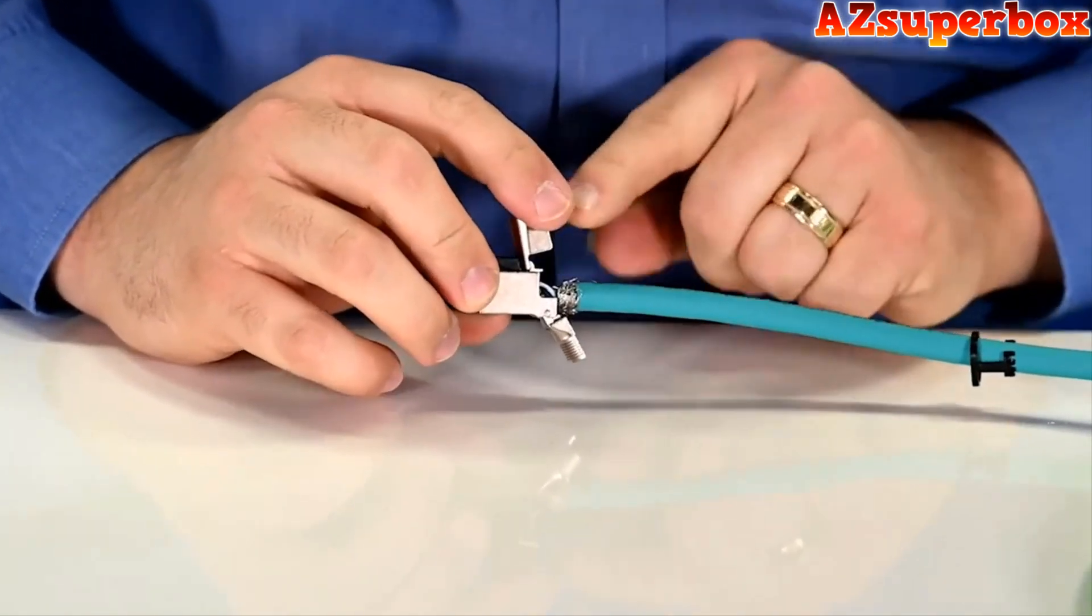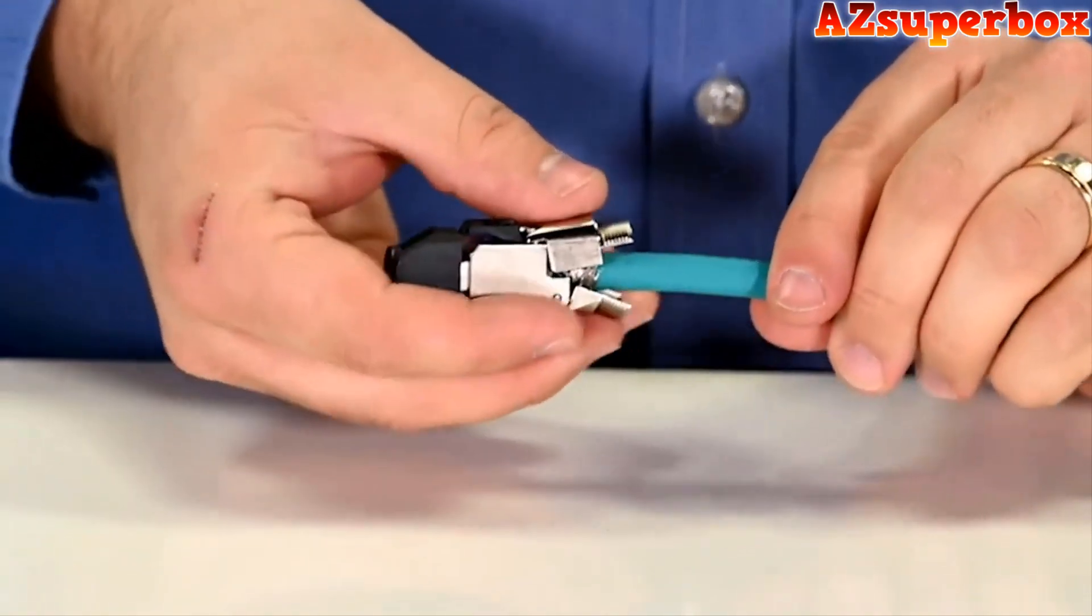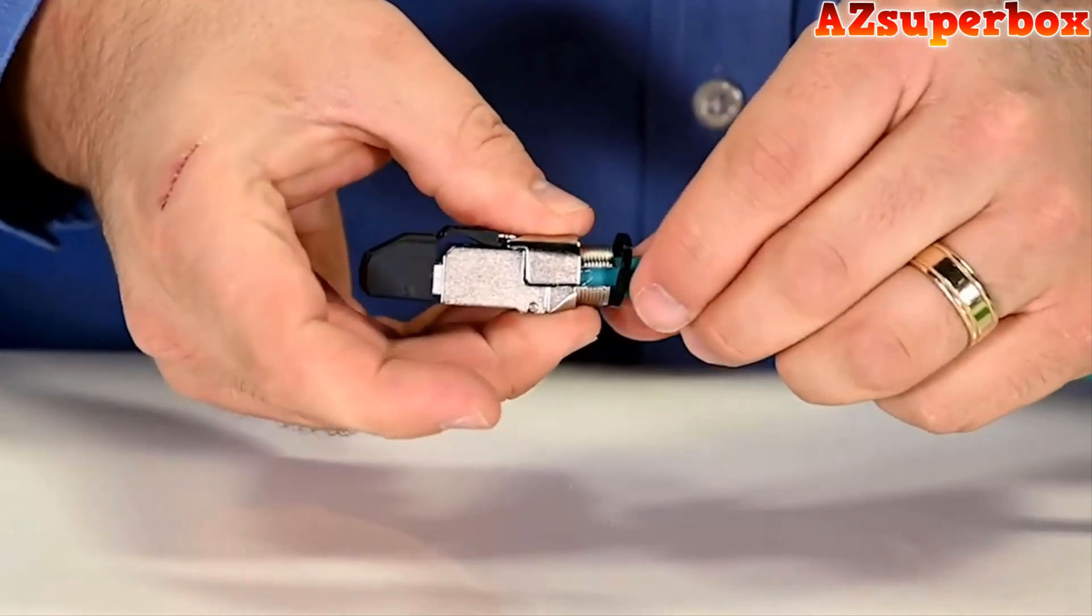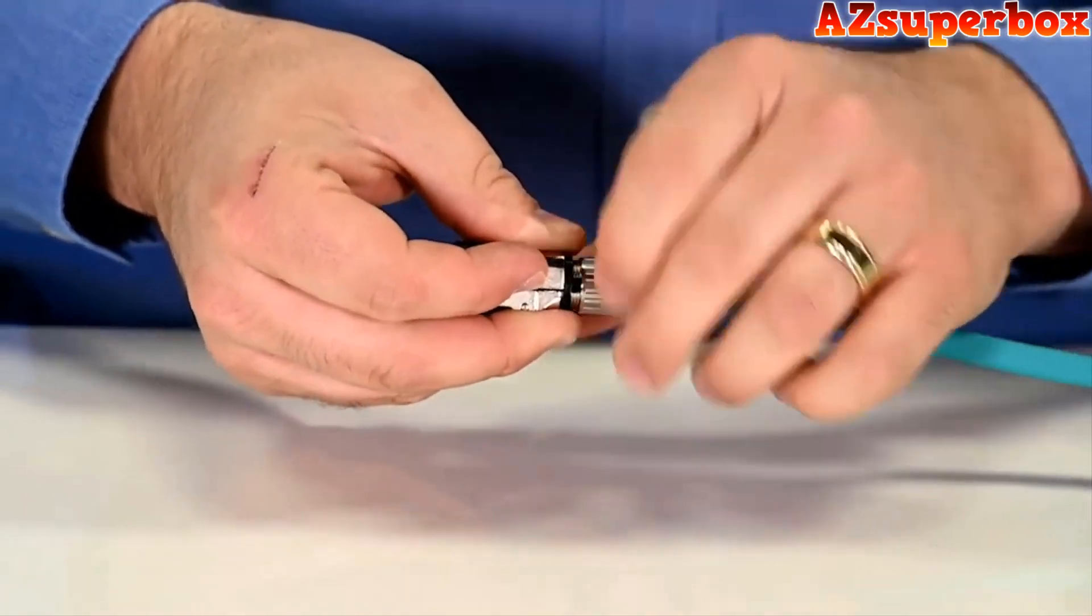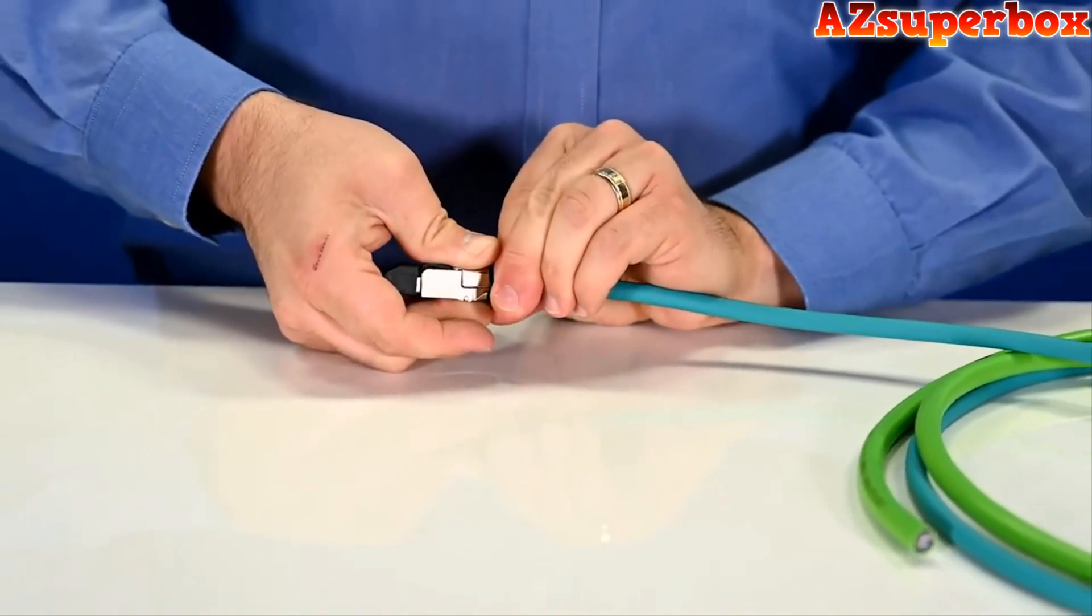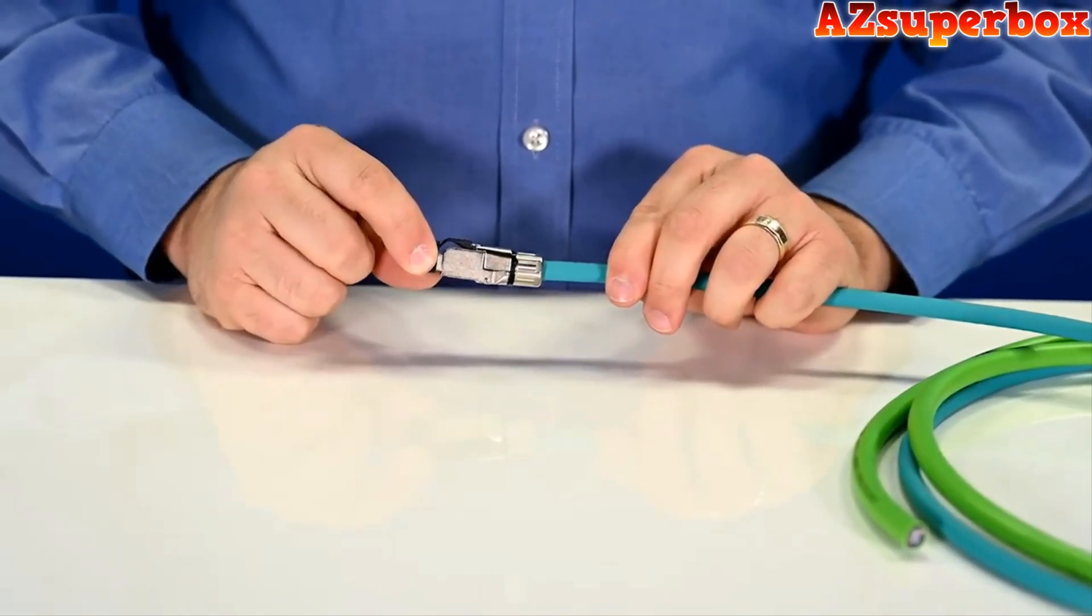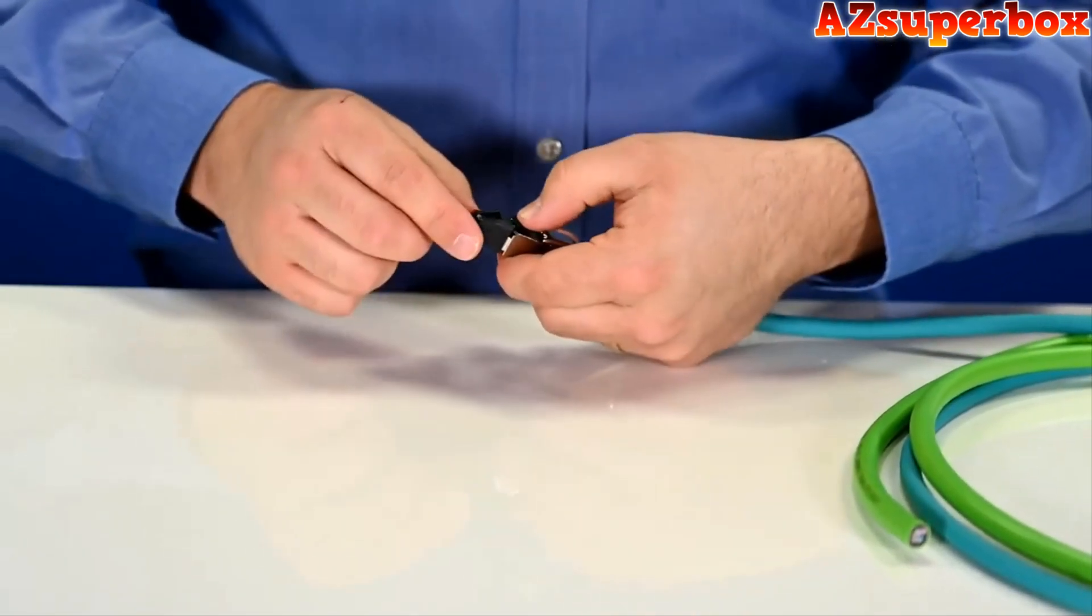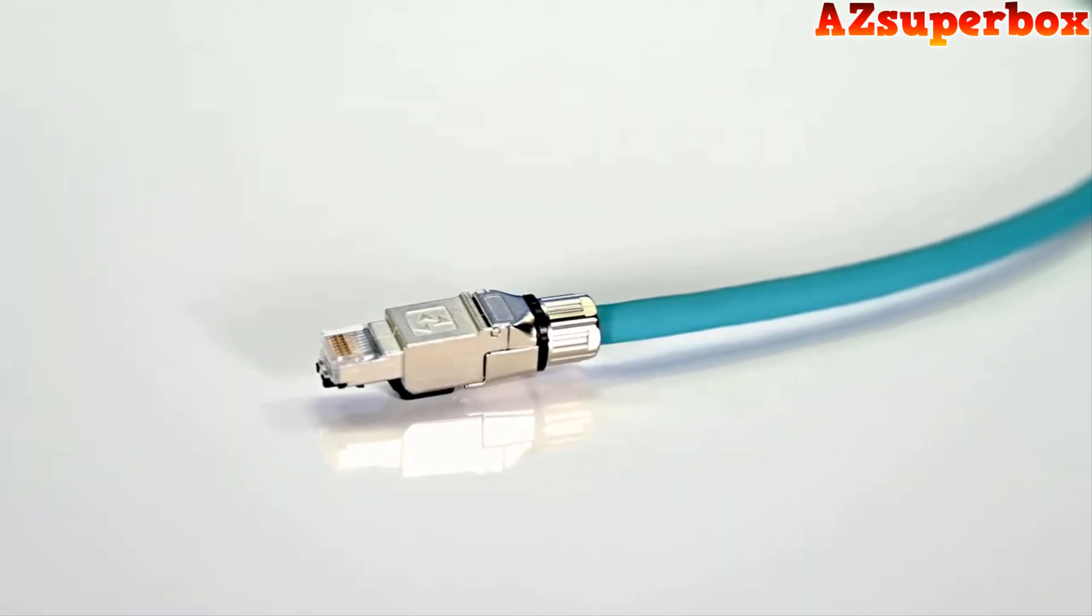So now we have our connector. We have our shield here that we need to terminate using this integrated shield clamp. And so we're just going to close up our housing, install our strain relief that we put on the cable earlier, and then tighten down that nut. With that done, we've made a safe, secure, and rugged connection between our connector and our Category 5 Ethernet cable. All that's left to do is remove that protective plastic housing and there's that RJ45 jack that you're so used to seeing.